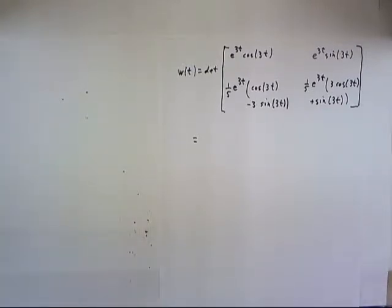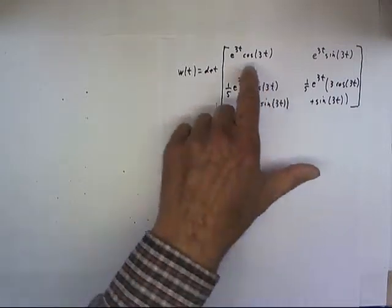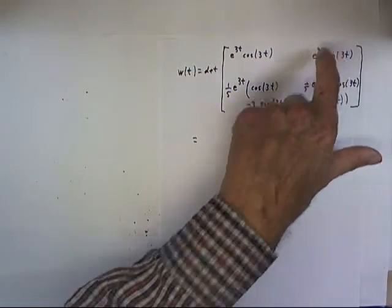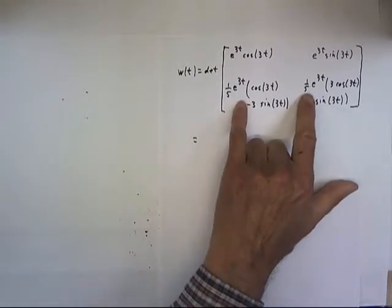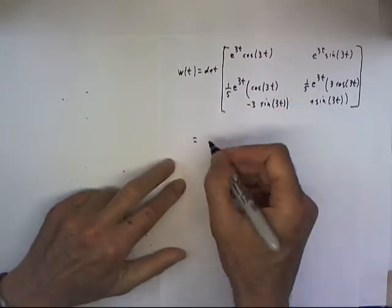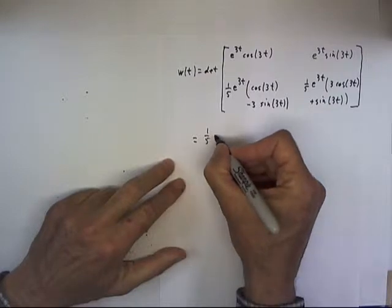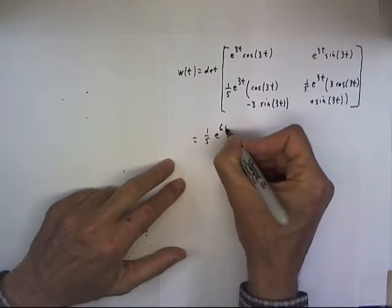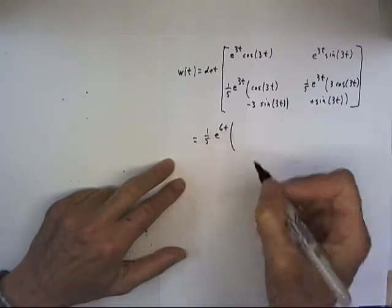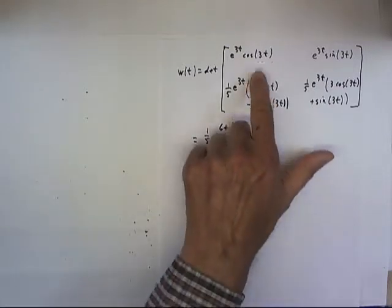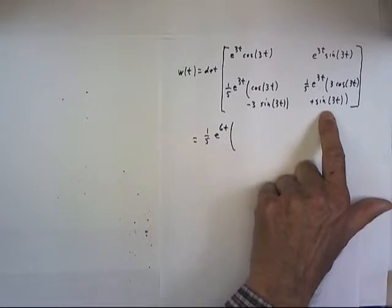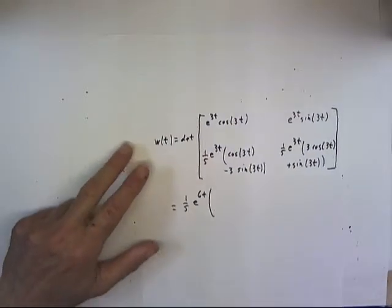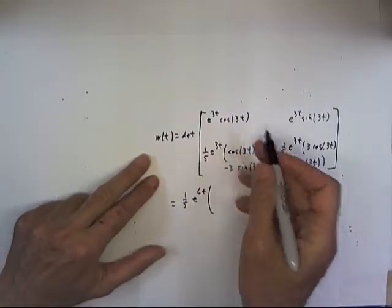And the determinant is fairly easy to calculate. If we multiply this by this or this by this we're going to get an e to the 6t and in fact we're going to get a 1 fifth e to the 6t. So I'm going to factor out that 1 fifth e to the 6t and then multiply by what's left. We have cosine of 3t times 3 cosine 3t plus sine 3t.